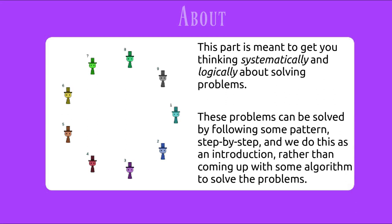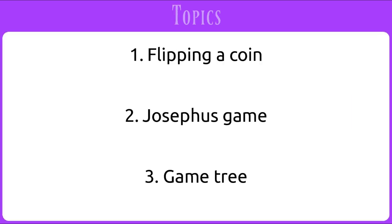We are starting off discrete math with some exercises to get you thinking systematically and logically about solving problems. These problems can be solved by following some pattern, step by step, and we do this as an introduction rather than coming up with some algorithm to solve the problems. In this lecture, we will look at problems consisting of flipping a coin, the Josephus game, and building out a game tree.